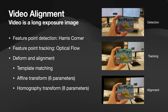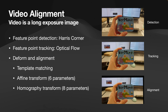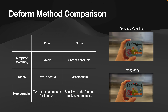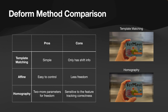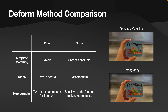There are simple examples on the right for the three processes. Each of the deform and alignment methods has pros and cons. The template matching is simple, but it only has shift info. The affine is easy to control, but it has less freedom than the homography. However, the homography is sensitive to feature tracking correctness. I mainly use affine and homography in this project.